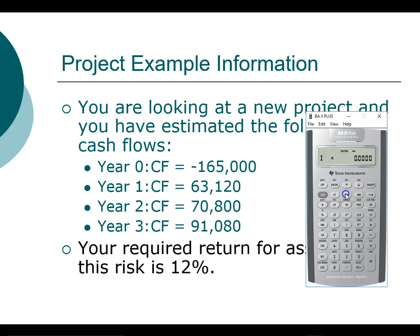So we'll go to NPV. To start with, we can look at what the net present value is if the interest rate is zero — that essentially just adds up all the cash flows. So scroll down and compute. The net present value at a zero discount rate is $60,000.